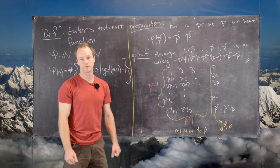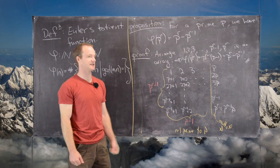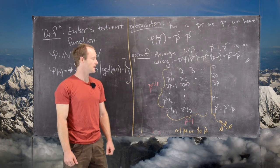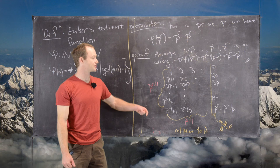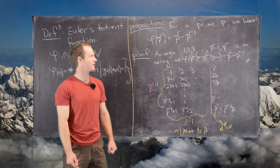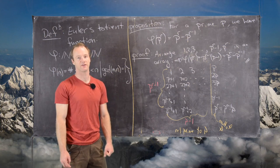This proof is pretty nice because it has a nice visual component to it. As you'll see, more proofs involving Euler's totient function have a nice visual component. See you next time!